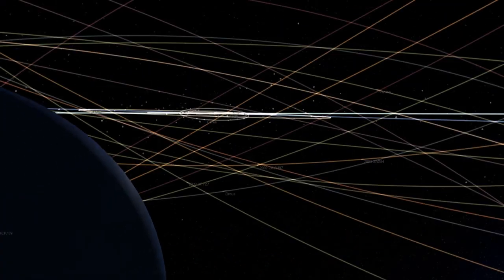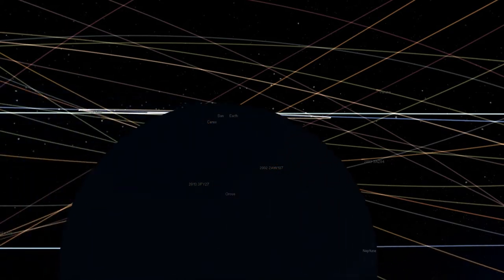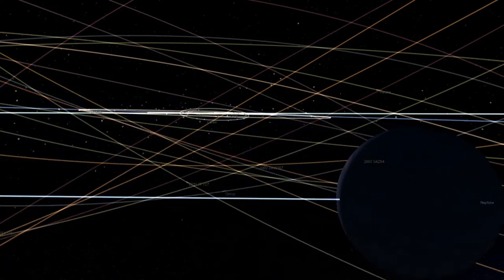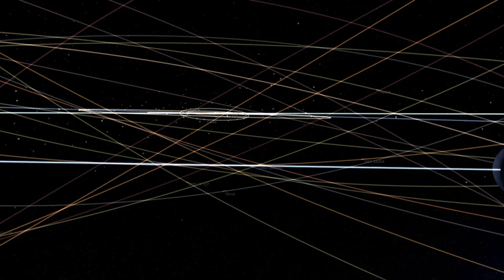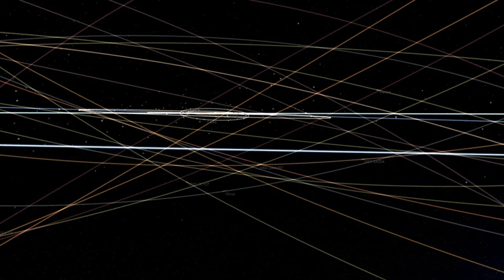It lies nearly 5.4 billion kilometers from the Sun and orbits it once every 165 years. Because of its extreme distance from us, we can't see it with the naked eye.